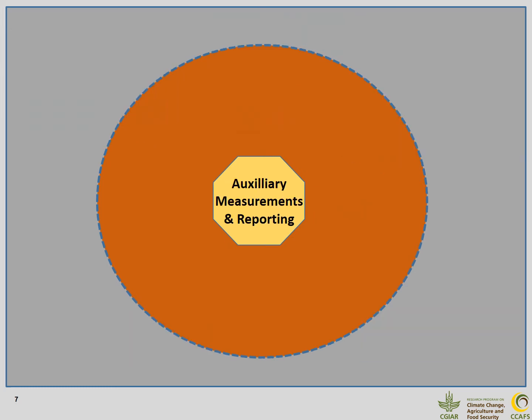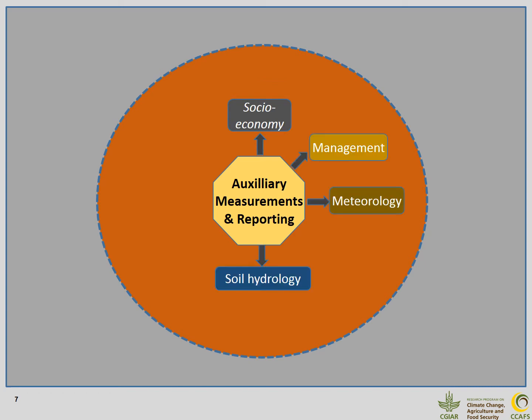Reporting greenhouse gas fluxes for a given field alone is not sufficient. We need to monitor additional factors to make it a truly valuable dataset that can be used by multiple users. Important parameters to observe and report include factors related to social economy, management, meteorology, soil hydrology, soil properties, and crop and plant performance.